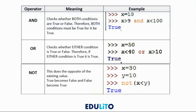There are three main boolean operators: and, or, and not. When you use 'and', both comparisons need to be true for the final comparison to be true. So if we've got x is greater than 9 and x is less than 100 — in this case x is 10 — x is greater than 9, so that's true, and x is less than 100, which is also true because 10 is less than 100.